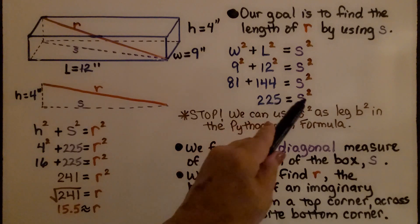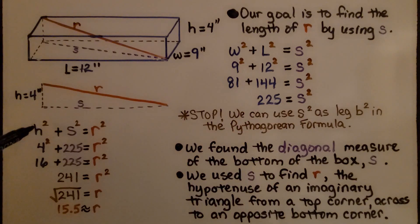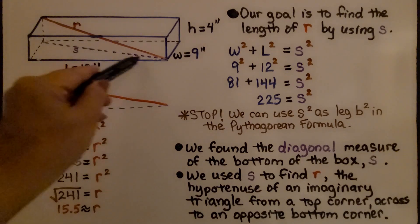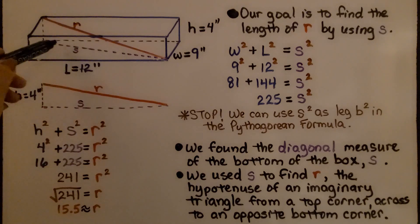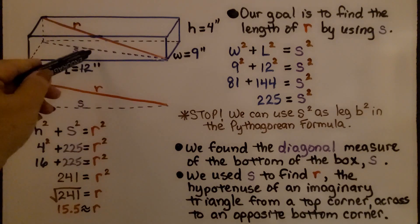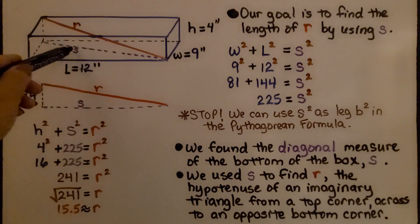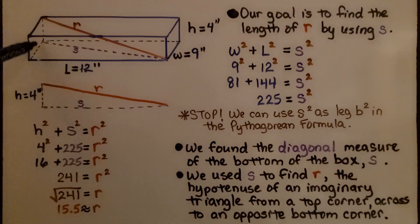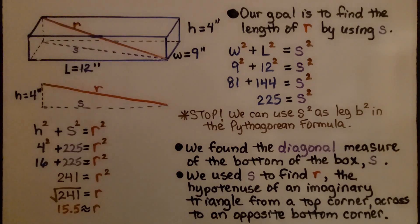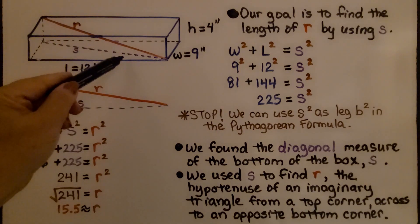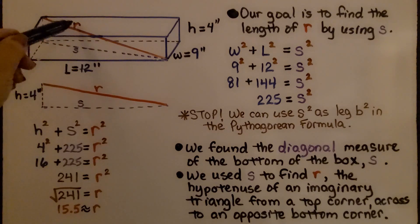So now we know that that is s squared. We have this triangle. We know that this is 225 for s squared. It's not just 225. It's 225 as s is squared. Now that we found this triangle right here, we're going to use this to find r as the hypotenuse. So we found the diagonal measure in the bottom of the box s. Now we use s to find r.